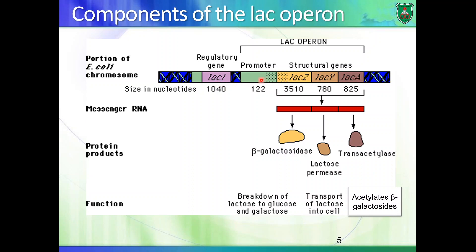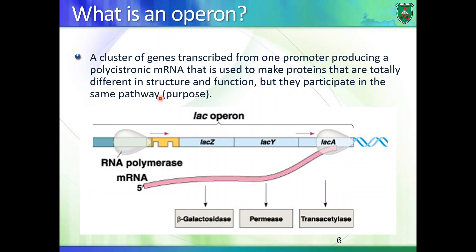The product of the lac I gene regulates how the lac operon is expressed. Remember that bacteria have operons like the lac operon, but they also have genes that produce one single protein — monocistronic genes — as well as polycistronic genes. An operon is a cluster of genes transcribed from one promoter producing one messenger RNA, and this messenger RNA is polycistronic, meaning it produces different proteins with different functions participating in the same pathway.